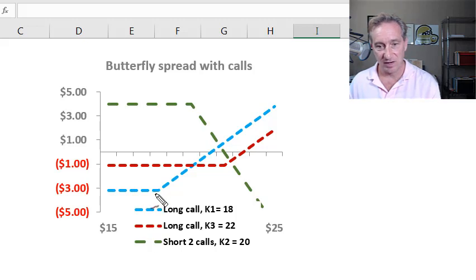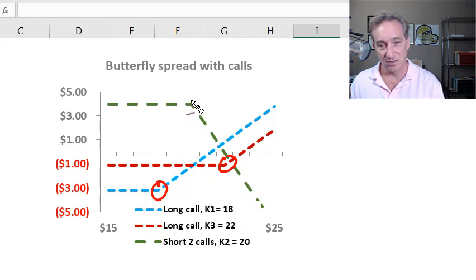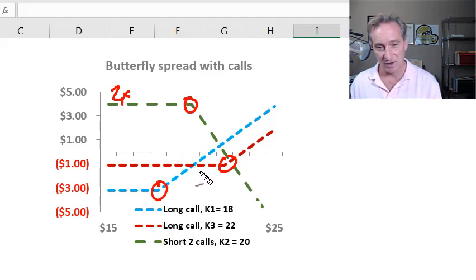So you can see in terms of strike prices here, we're long a call at 18, long a call at 22, and offset the two calls that we're long, we write two calls. So this is two times right here in the middle at 20 at $20. And this is how the butterfly spread is also going to have a cost to us because the long call here at 18 we purchased, that's already $2 in the money. So it's $3.21. This 22, this long call at strike of 22 is out of the money, but it still costs us $1.13.